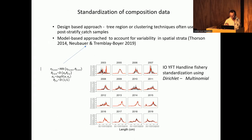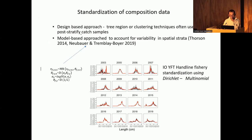Just briefly on the standardization of catch composition data: Mark talked about tree regression used to define the fishery and fleets. You can use tree regression to define fleets, then post-stratify catch samples to scale them and mitigate biases — a pretty common approach. There's also a model-based approach using direct multinomial to account for variability in spatial strata. We applied those to yellowfin data and it works quite well. There have also been some recent developments to that method.